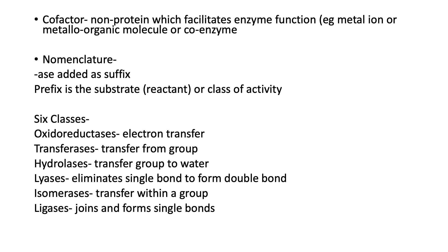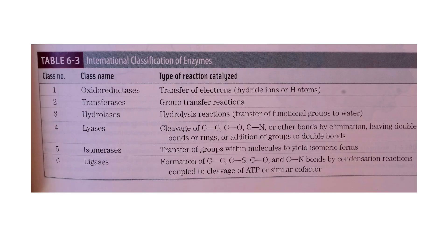Isomerases transfer groups within a molecule, and ligases join molecules and form single bonds. To revisit in more detail: oxidoreductases transfer electrons, including hydride ions and protons. Transferases are group transfer reactions. Hydrolases perform hydrolysis reactions, transferring functional groups to water. Lyases perform cleavage of carbon-carbon, carbon-oxygen, or carbon-nitrogen bonds by elimination, leaving double bonds or rings, and also add groups to double bonds.